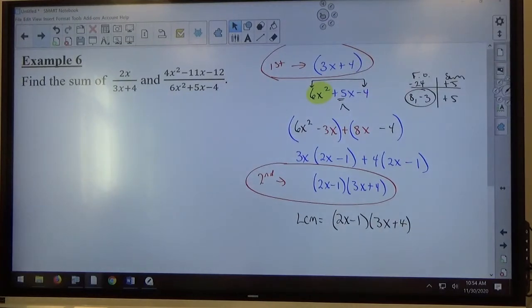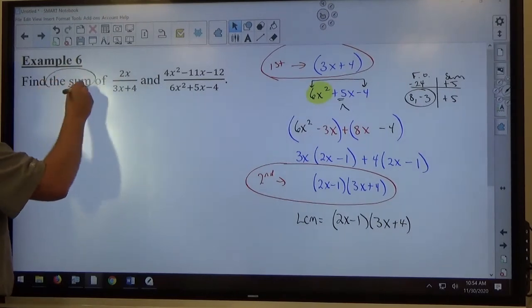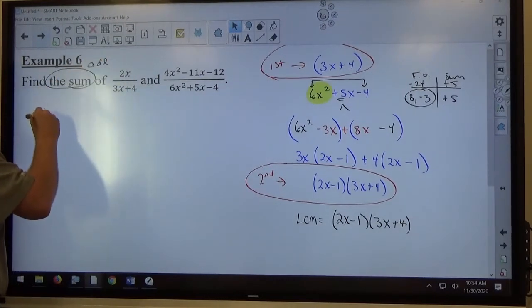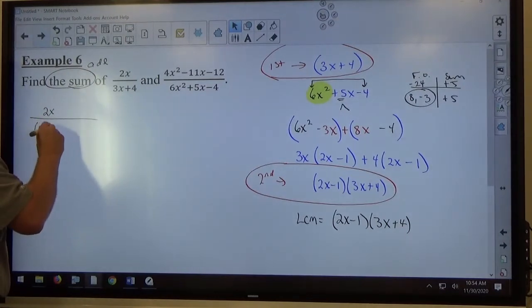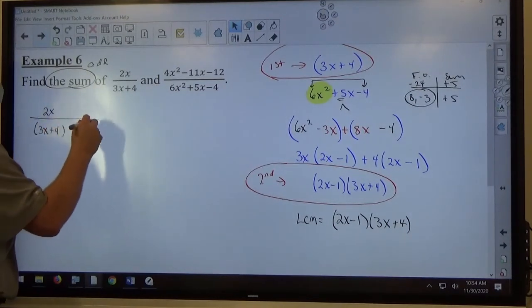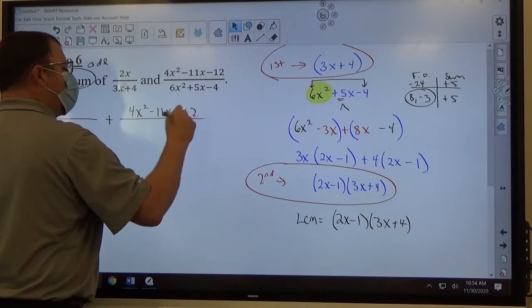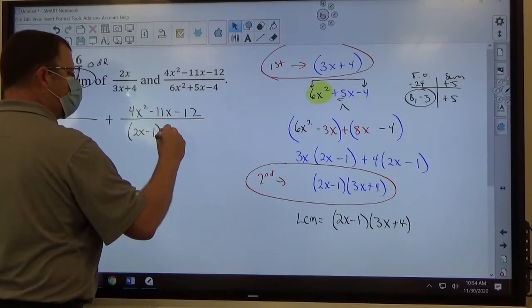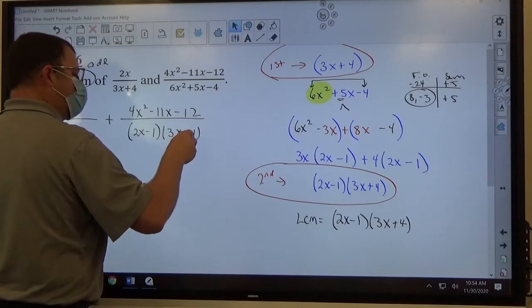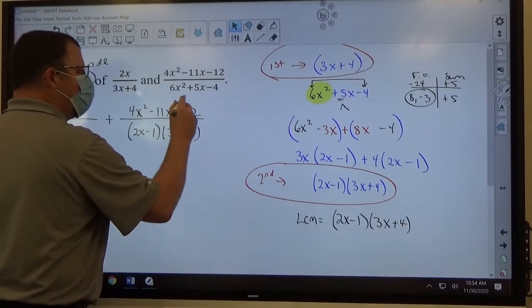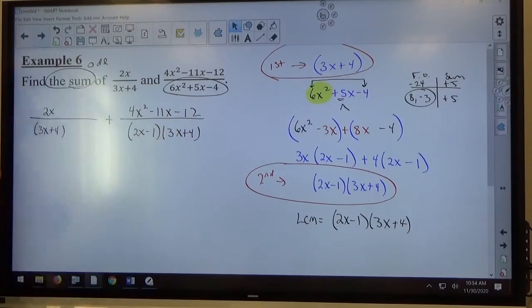I simply want both denominators to be (2x - 1)(3x + 4). My problem says find the sum of—sum means to add. So I'm going to get 2x over 3x + 4, plus 4x² - 11x - 12 over (2x - 1)(3x + 4). Once I've written the problem out with the denominators in factored form, now it's inventory time. What do I have? What do I want? What's missing?